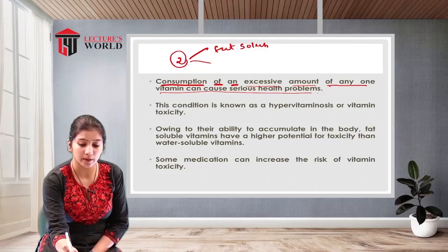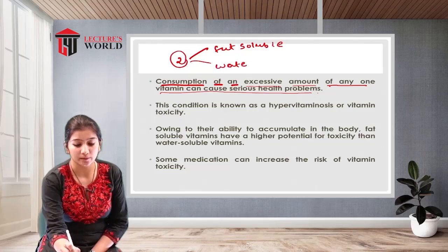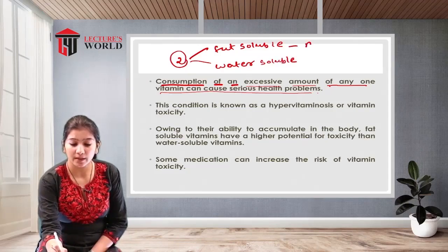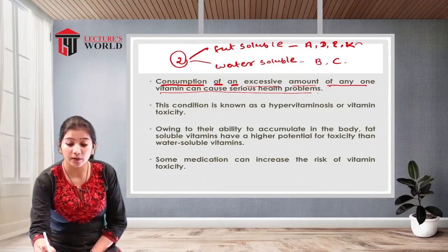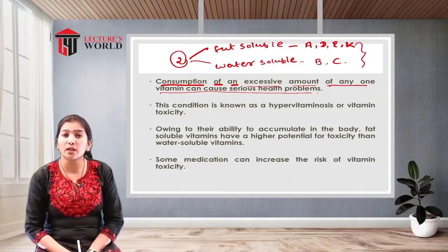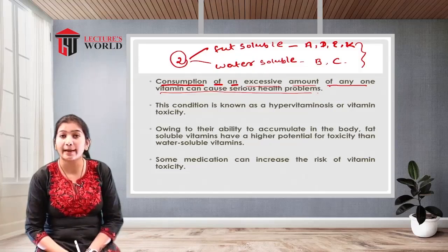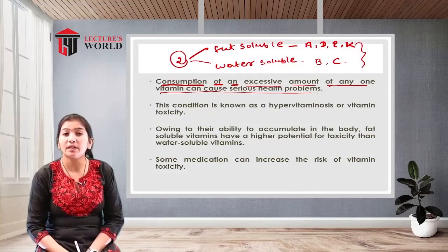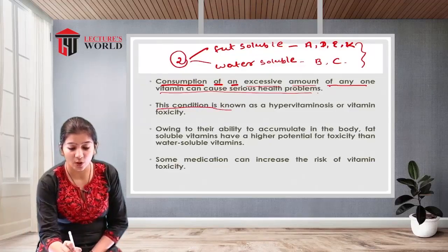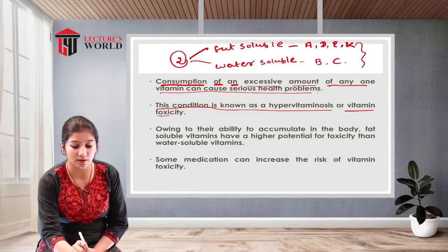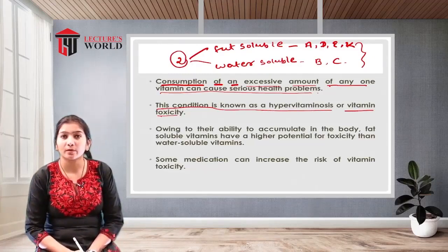There are two types of vitamins: fat soluble and water soluble. Fat soluble vitamins are vitamins A, D, E, and K, whereas water soluble vitamins are vitamin B and C. If any of these vitamins are consumed in a higher amount, that may cause serious health problems — a condition known as hypervitaminosis or vitamin toxicity.